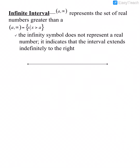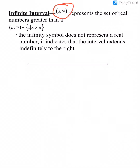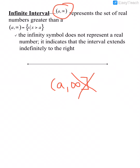An infinite interval means our interval goes to infinity in at least one direction. Whenever it's going towards either positive or negative infinity, infinities always use parentheses. You would never write the interval from A to infinity using a bracket, because the bracket means that the number is included, and we can't include infinity as a particular number.